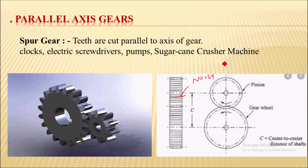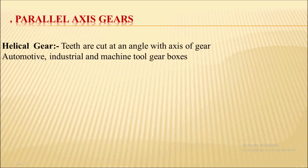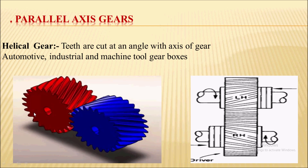These gears are suitable for low speed applications and the efficiency of this gear is also good. The applications of spur gear include clocks, electric screwdrivers, pumps, sugar cane crusher machines, machine tool gearboxes, and automobile gearboxes.